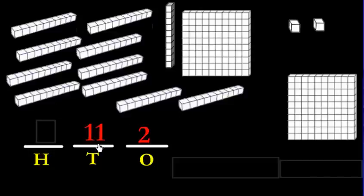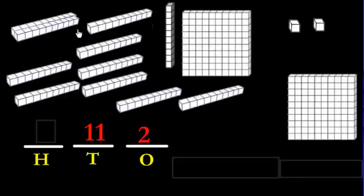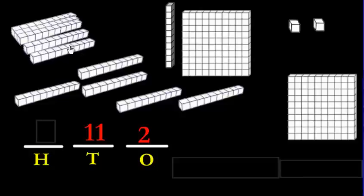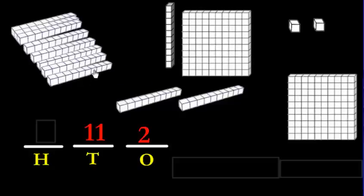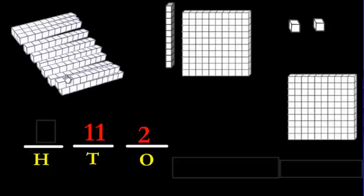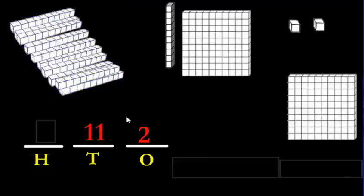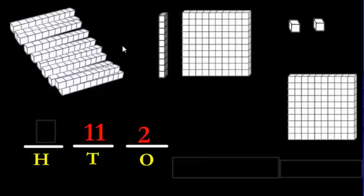Why can't I put eleven? Because remember the rule of ten: once you can find ten, you stick those ten together and make a new type of block. So these tens — two, three, four, five, six, seven, eight, nine, ten — what do ten tens make? Ten of these rods makes one of these hundreds flats. We can't put eleven tens; we have to take ten of them and stick them together.